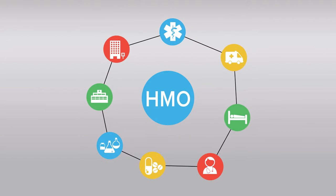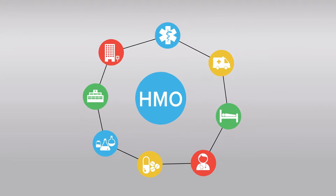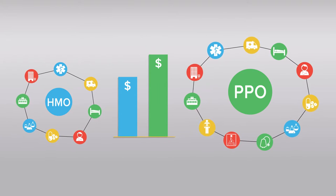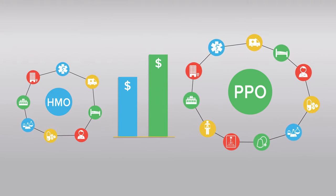HMOs have usually smaller networks than other plan types like PPO or POS, but HMOs can be cheaper than those other plan types too.